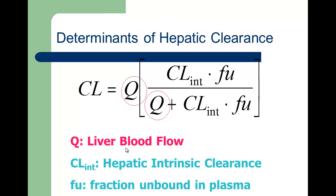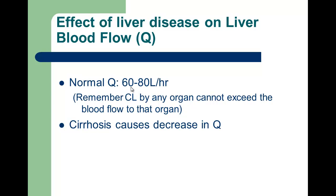Q is liver blood flow. Normal liver blood flow is traditionally 90 mL/min, though it can range between 60 and 90 — some literature says 80. Clearance by that organ can never be larger than the blood flow to it. Think of Q as the milk coming into a dairy — you can never manufacture more than what's being delivered; that's always the ultimate limiting step.